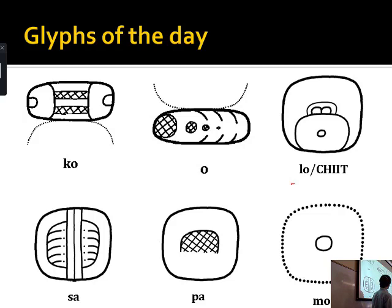Maya clowns look like people dressed in full-body net suits with very large, exaggerated noses, and they carry rattles. There's a whole article written about what Maya clowns look like. The full form of the sign is a whole fellow looking like that, and the detail is just a piece of net. So that's the syllable 'pa.' The syllable 'mo' is very generic — it's just a bunch of dots.